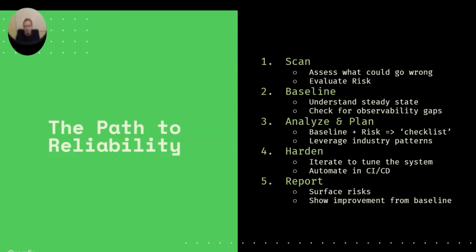From this we have a checklist of things to go do, and we can work through it over weeks or months to improve our system. As we find each thing, better understand it, and tune it, we can build it into our build and deploy pipelines to ensure it's always tested and we're not regressing. One critical piece I've added: we have to do a good job explaining the value of the work we've done to the business.